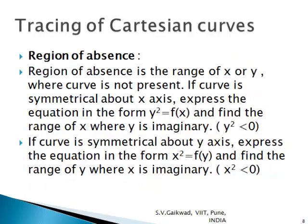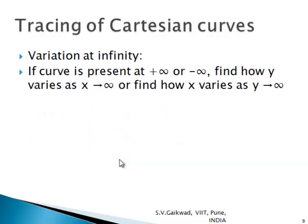To find the region of absence, determine in which part of the x- or y-axis the curve is absent. If the curve is symmetrical about the x-axis, express the equation as y² = f(x) and find the range of x where y² < 0, making y imaginary. If symmetrical about the y-axis, express it as x² = f(y) and find the range where x² < 0. Finally, if the curve extends to infinity, find how y varies as x → ∞, or how x varies as y → ∞.